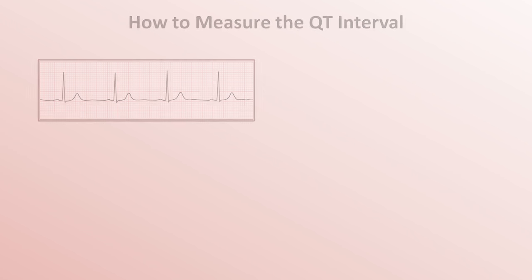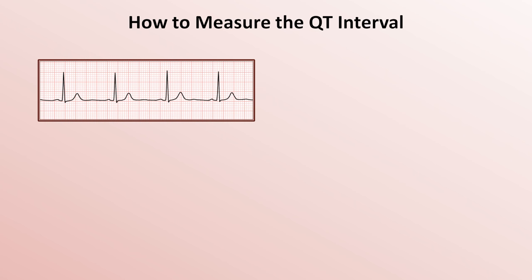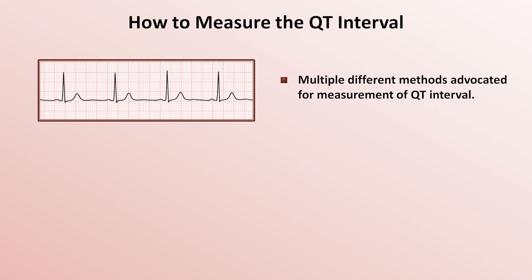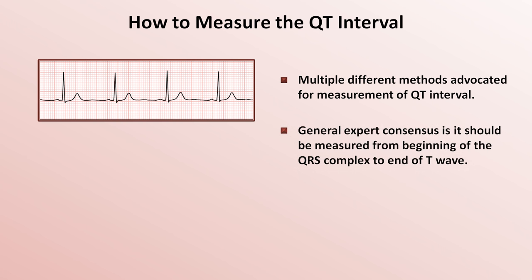On the EKG, how does one measure the QT interval? There are multiple different methods advocated for its measurement. As the QT interval represents the time delay between ventricular depolarization and repolarization, it is measured from the beginning of the QRS complex to the end of the T wave. That's by far the most common method. So for example, in this case, the QT interval appears to be just two large boxes,